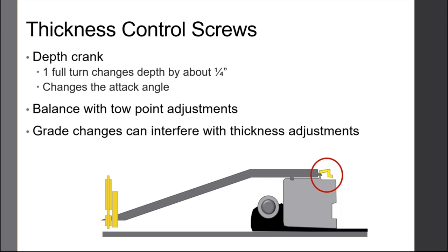Also keep in mind that grade changes can definitely interfere with your thickness adjustments. If you're going along and everything's flat and consistent but you're running a little off on your depth, you make an adjustment and then suddenly start going uphill — think about that interaction like the trailer hitch. Make sure you're aware that grade changes can interfere with those adjustments. In a sense, that's making two changes at the same time. When you go from a flat section to a grade, I would not make any thickness adjustments right then because you want to know what change had what effect. Changing two things at the same time makes that impossible to figure out.